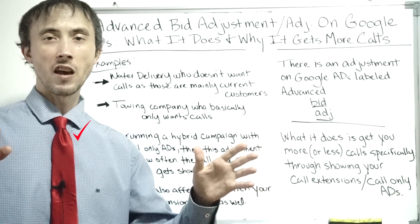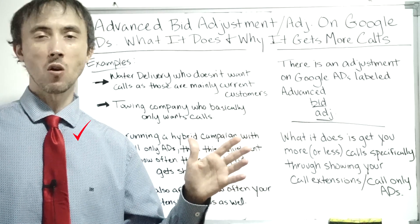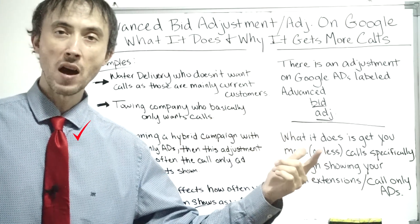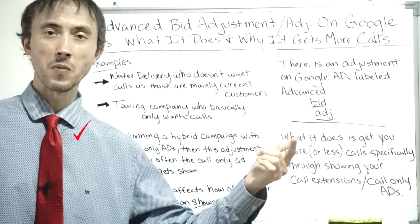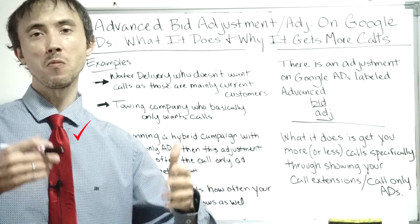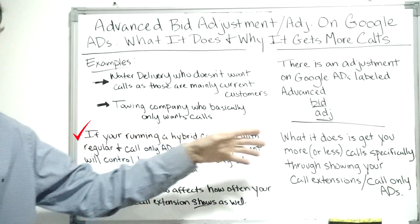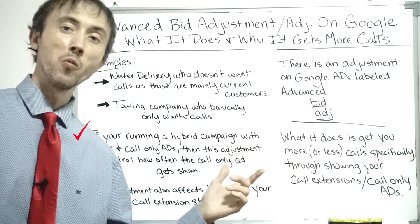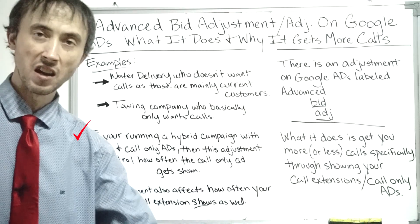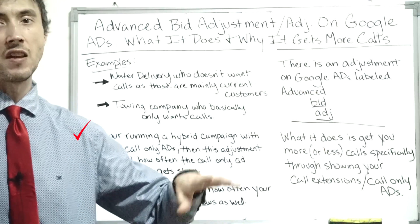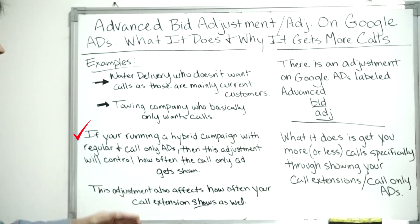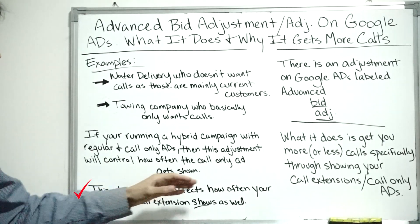If you want to run call-only ads, put them in a separate campaign — don't mix them with regular search ads. But if you've been running that hybrid campaign for a while, it's better to just use this bid adjustment to get what you want rather than breaking it out into a separate campaign and risking negative volatility in your results from making a significant account change.